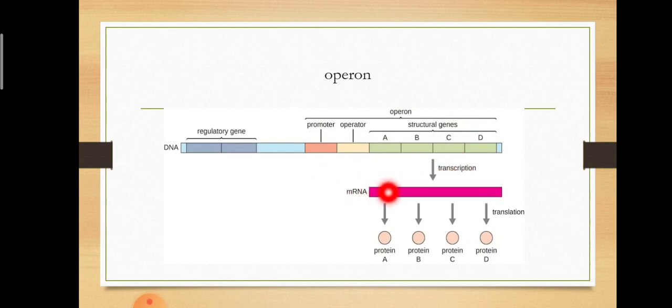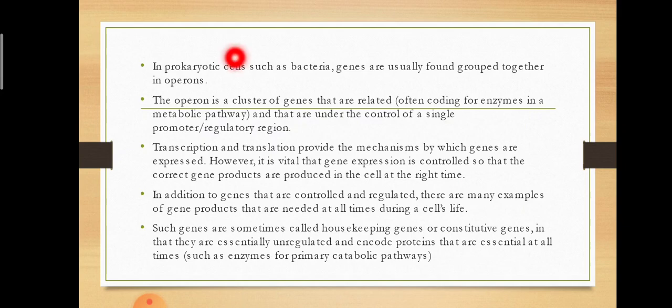After transcription of this DNA, we get mRNA, and when this particular mRNA is translated, then we get a particular protein. In prokaryotic cells such as bacteria, genes are usually found grouped together in the operon. An operon is a cluster of genes that are related — related for some particular task or function.